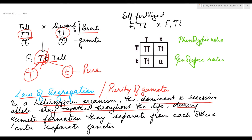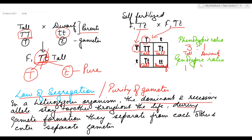When we self-fertilize the F1 generation, the gametes of each parent combine. Capital T with capital T gives pure tall; capital T with small t gives hybrid tall; small t with capital T gives hybrid tall; and small t with small t gives pure dwarf. This shows that the phenotypic ratio is 3:1 — that is 3 tall and 1 dwarf — while the genotypic ratio is 1:2:1 — 1 pure tall, 2 hybrid tall, and 1 pure dwarf.